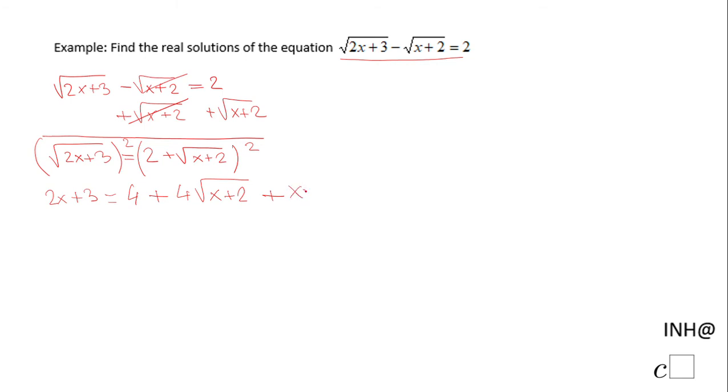If you do not see this pattern, the perfect square pattern, you may want to use FOIL and you should get the same answer. Let's simplify the right side first, and we have 4 square root of x plus 2 plus x plus 4 plus 2, which is 6.